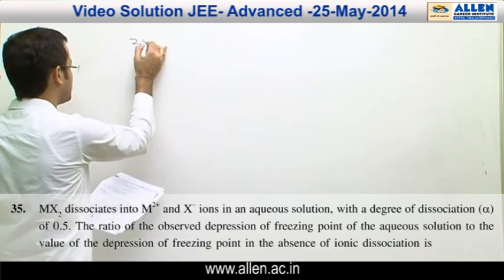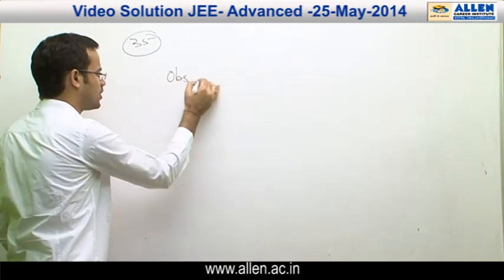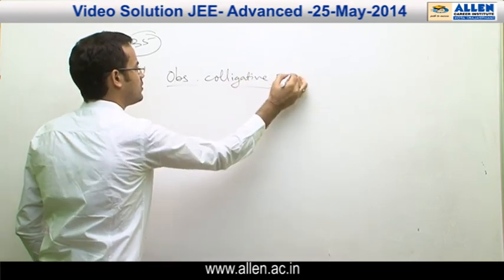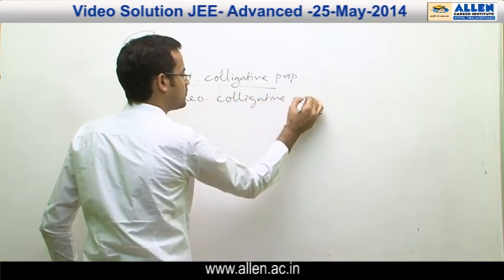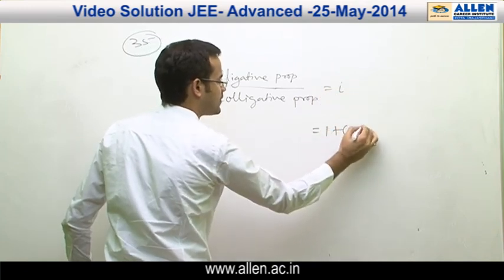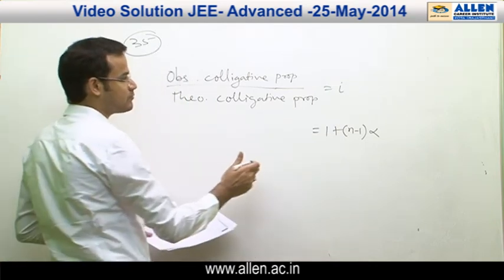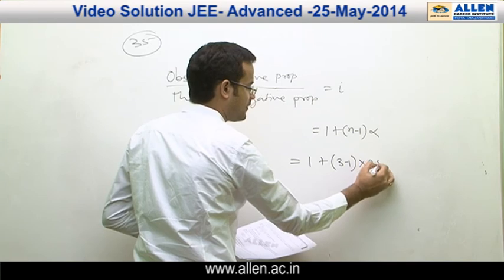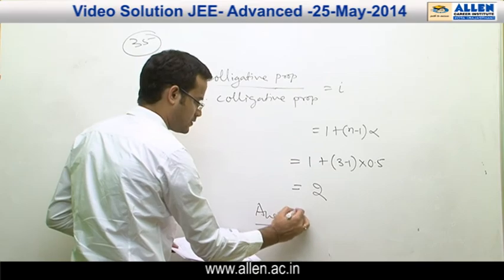Question number 35: The ratio of observed colligative property upon the theoretical colligative property equals to Van't Hoff factor, which is 1 plus (N minus 1) alpha. Here in this case, N is 3 and alpha is 0.5. By solving this, we get 2. So correct answer is 2.